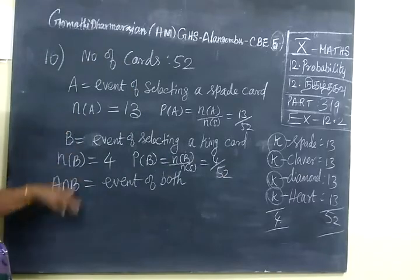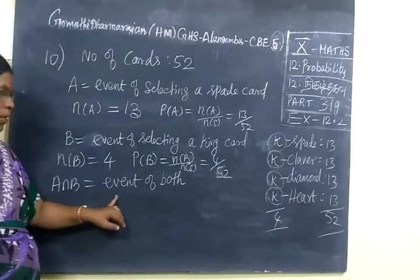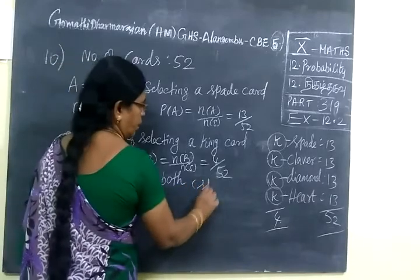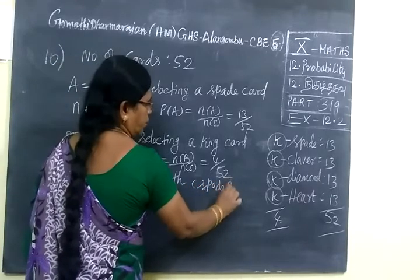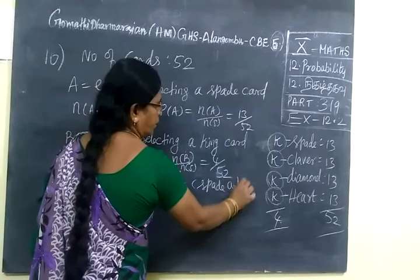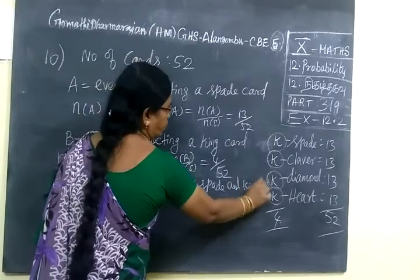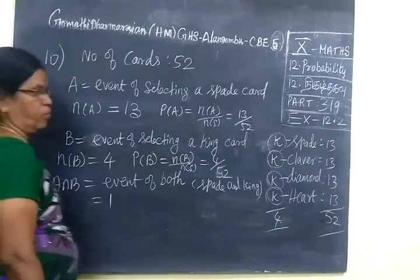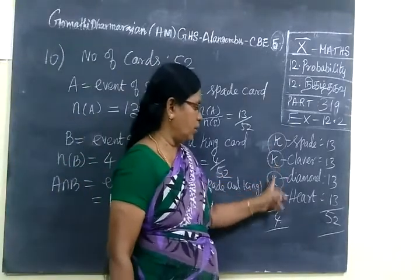A intersection B is equal to event of both. That means Spade as well as King. Spade is King. King card is 1. So one card is the same. You know, only one card is the king card.